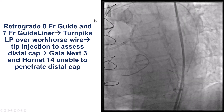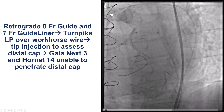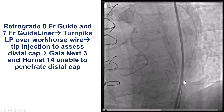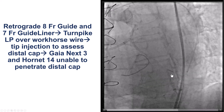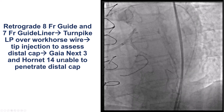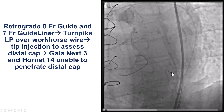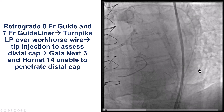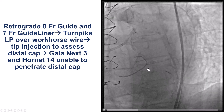This is the retrograde system: 8-French AL-1 guide on the left, a 7-French guide extension going essentially all the way down close to the distal anastomosis, and through this we advanced the Turnpike LP microcatheter. Attempts were made to advance stiff guide wires — a Gaian X3 and a Hornet 14 — to puncture the distal cap. Unfortunately the cap was fairly calcified and it was not possible to penetrate through it.